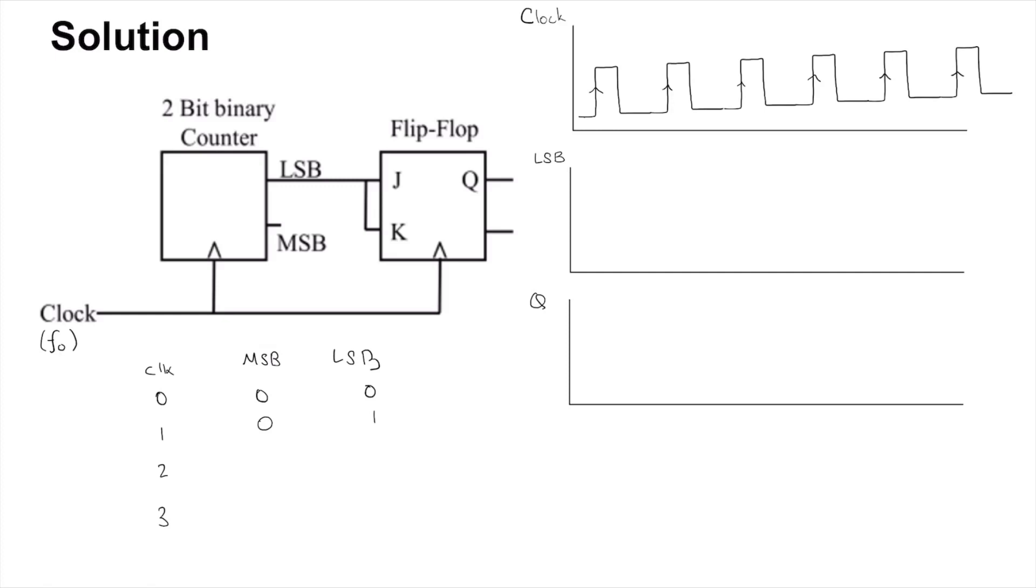When the second clock pulse happens it is going to be 10, then 11, and of course it will go to 00 and so on. This is the functionality of the 2-bit binary counter. Notice that the period of the LSB is two clock pulses.